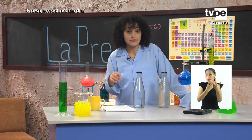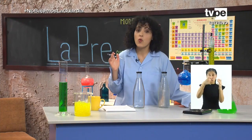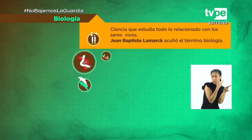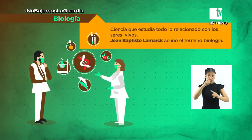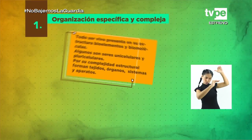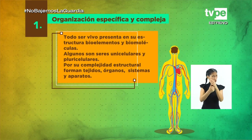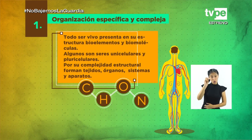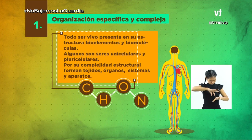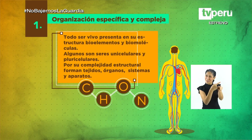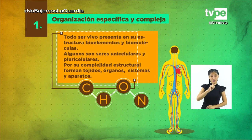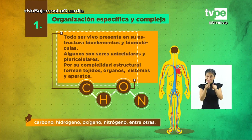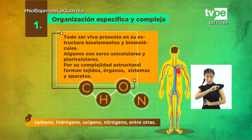De esta manera, la biología, que estudia todo lo relacionado a los seres vivos, recibe un permanente estudio científico. Todos los seres vivos son diferentes unos de otros y presentan características generales, pero también difieren por ser particulares y específicos. Todo ser vivo presenta en su estructura bioelementos y biomoléculas. Algunos son seres unicelulares y pluricelulares. Por su complejidad estructural, forman tejidos, órganos, sistemas y aparatos. Incluso las bacterias tienen ADN y están formadas de proteínas, y presentan estructuras químicas como el carbono, hidrógeno, oxígeno y nitrógeno, entre otras.